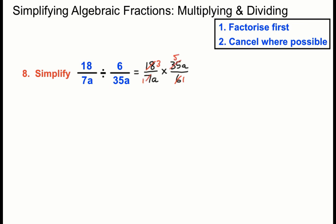So 6 can go into itself once and into 18 3 times. 7 can go into itself and go into 35 5 times. a can go into itself once and into the top once. We're left with 3 times 5 on the top and 1 times 1 times 1 on the bottom and we get 15 there. It could be 15 over 1 but we don't need to write the bottom ones in.